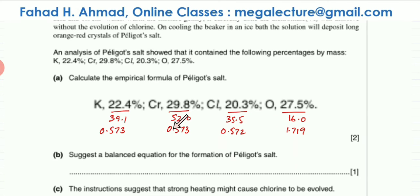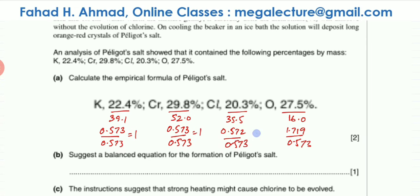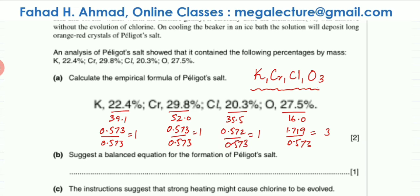The next step is to find the simplest whole number ratio. I'm going to divide everything by the smallest value, which is 0.573. All of them divided by 0.573 give: K = 1, Cr = 1, Cl = 1, and O = 3. This gives the empirical formula of the salt as KCrClO₃.